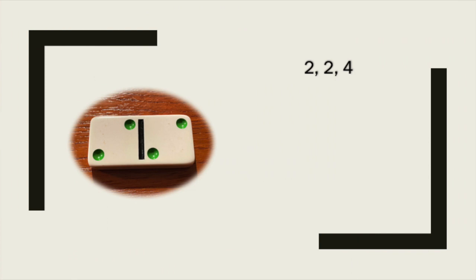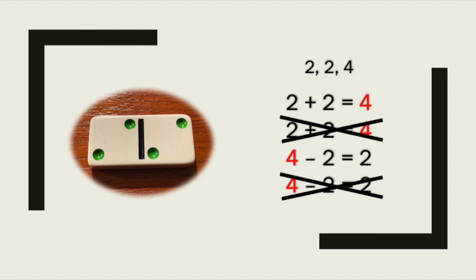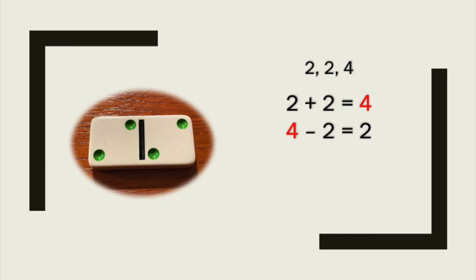Let's see what would happen if we tried to write two addition facts and two subtraction facts to go along with this domino. My two addition facts are two plus two equals four and two plus two equals four. My two subtraction facts are four minus two equals two and four minus two equals two. Since I don't need to write the same thing twice, let's get rid of those number sentences that I already have.